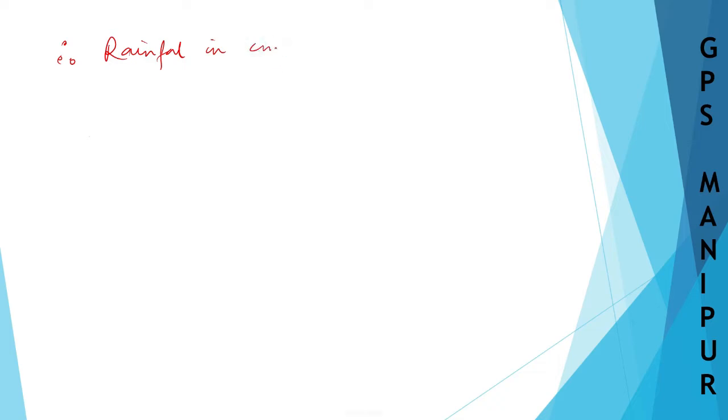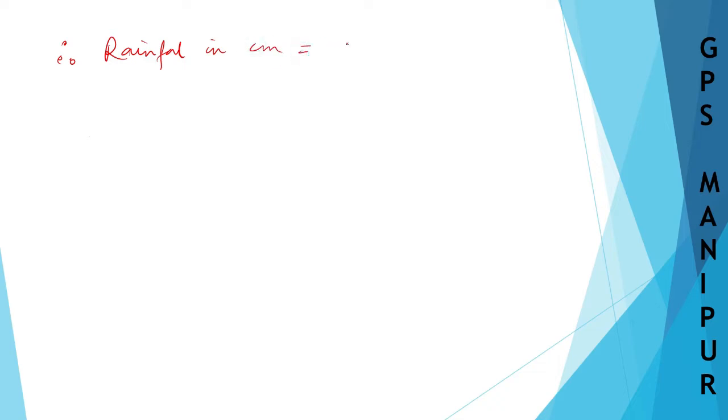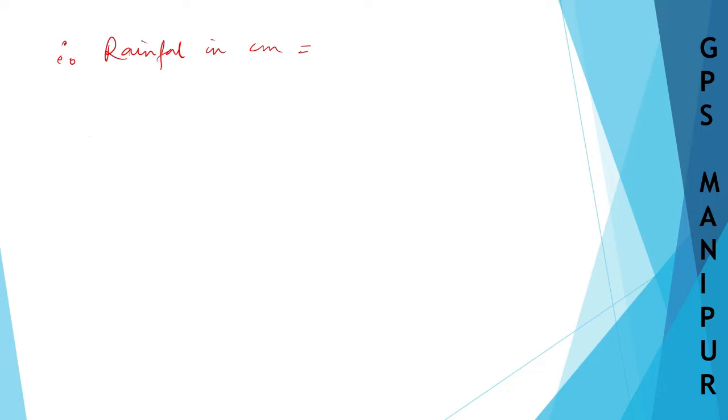In cm, centimeters. So here, length into breadth is here, and height, and now rainfall in centimeters is equal to volume of the frustum.